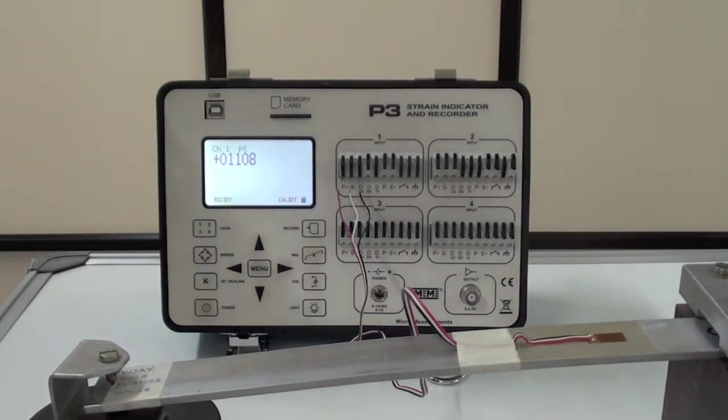It is equally important that when the load is removed, a full return to zero is achieved. This will be a good confirmation of the high quality of the gauge bonding.